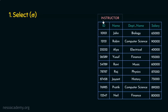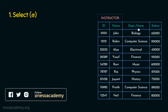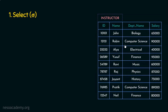Let's take an example table — the instructor table, which contains the attributes: instructor ID, name, department name, and salary. The select operation on this relation will output tuples containing all four attributes: ID, name, department name, and salary. We are not filtering based on attributes — we are selecting tuples with all four attributes. That's the key difference between the select and the project operation, which we'll cover in the next presentation.